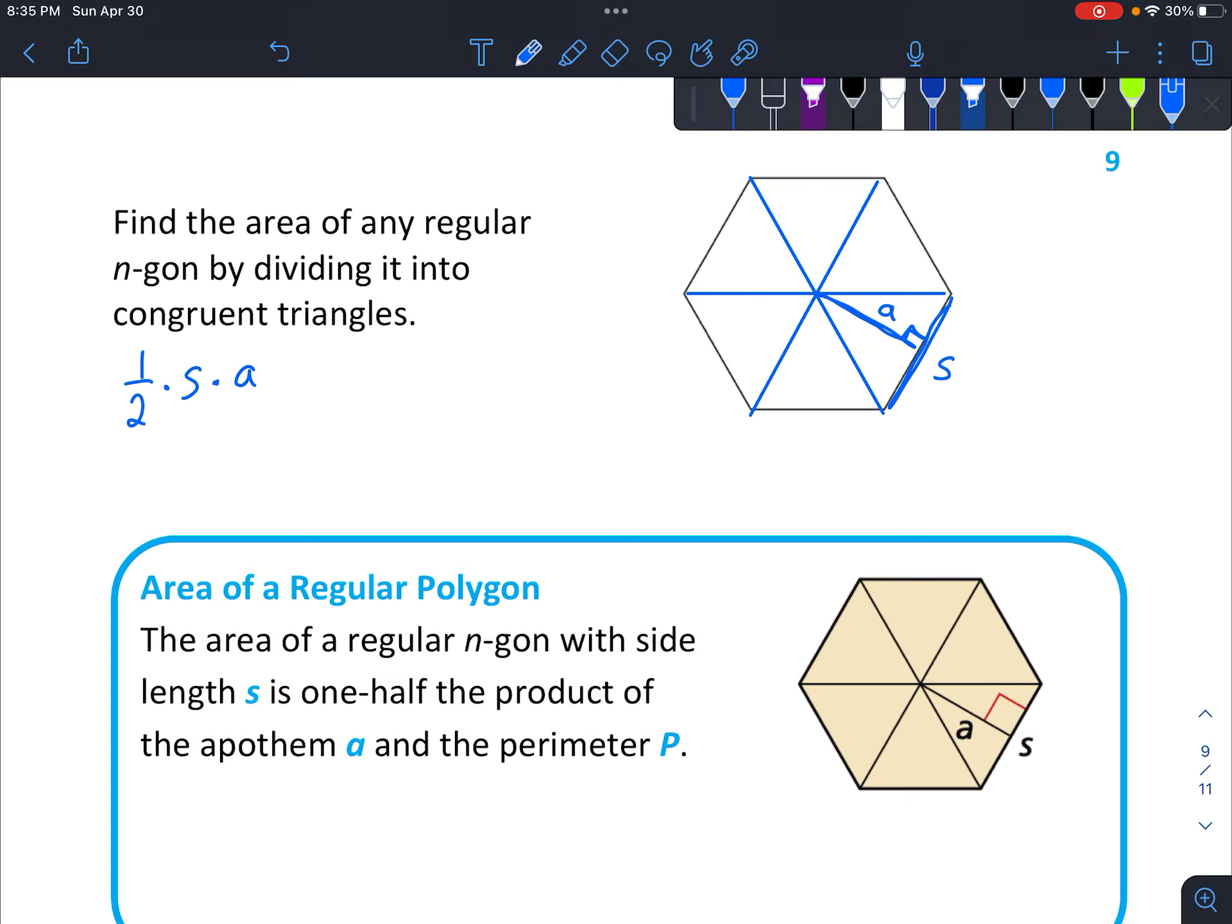However, to keep it generic or to make it a formula, we're going to call it N. So N equals the number of triangles. Well, the number of sides would be the number of triangles. So number of triangles equals N.